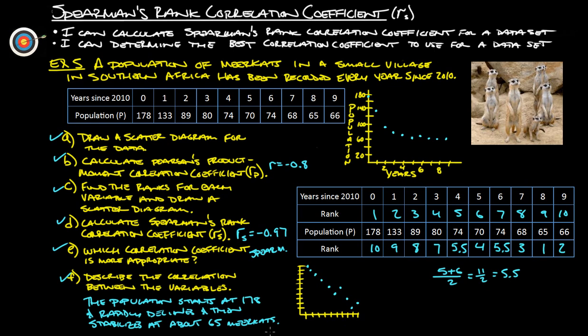So that's what we'd want to write down here. Population starts at 178, rapidly declines, and then stabilizes at about 65 meerkats. All right. So all we have for Spearman's rank correlation coefficient. If you have any further questions, please feel free to ask.